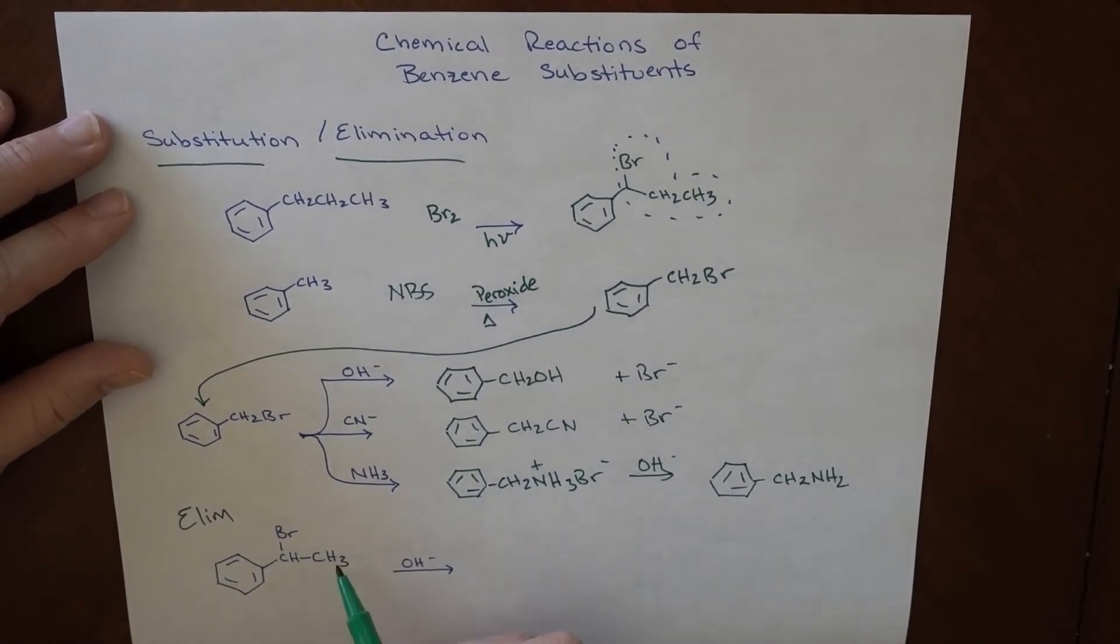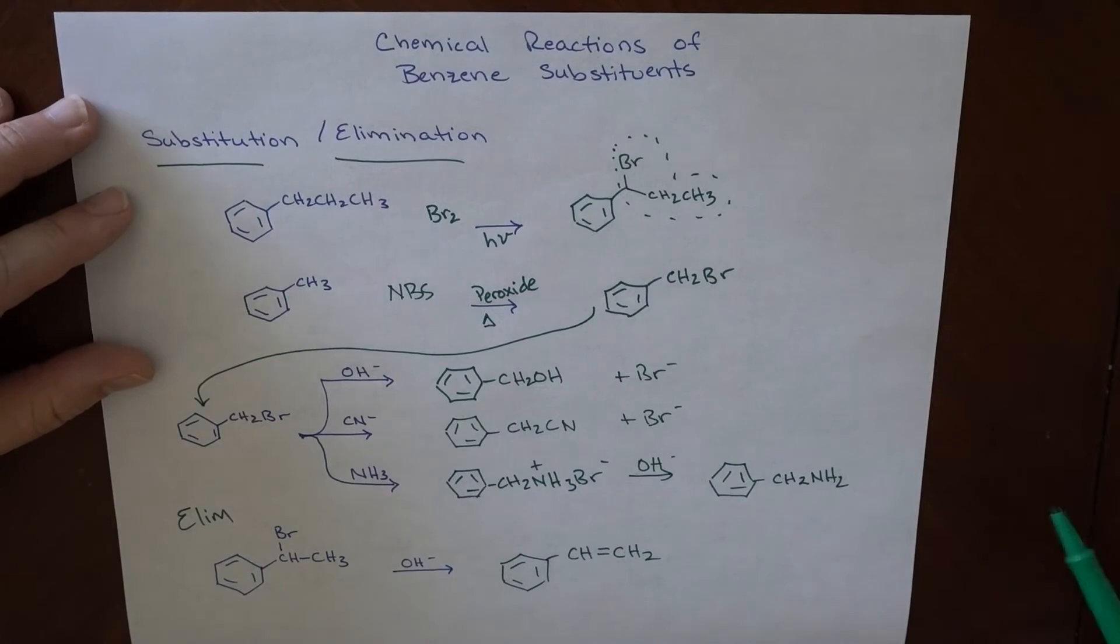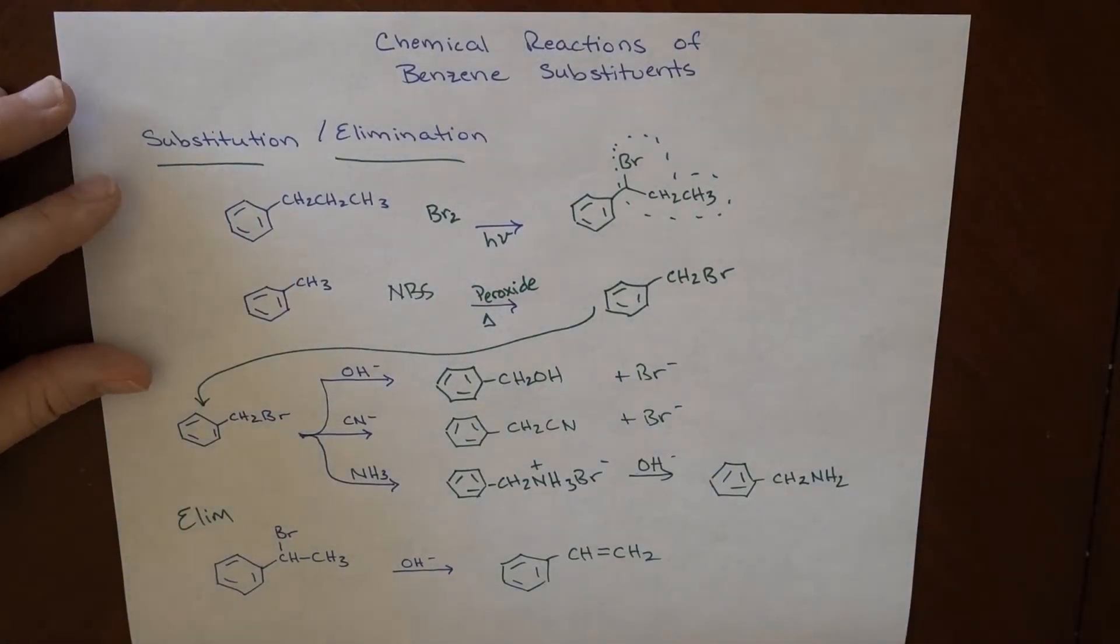And so if we have a base here, we can end up kicking off this bromine and taking out hydrogen from here. And when we do that, we end up getting a CH double bond CH2. So we can make one of these, I think this is styrene. So we can end up making that as well.